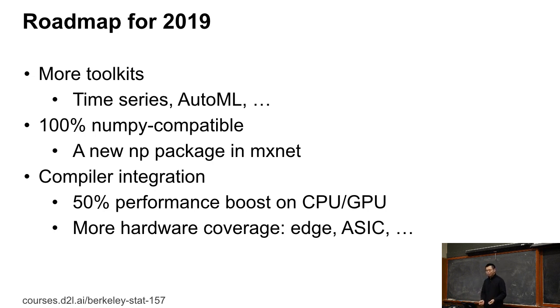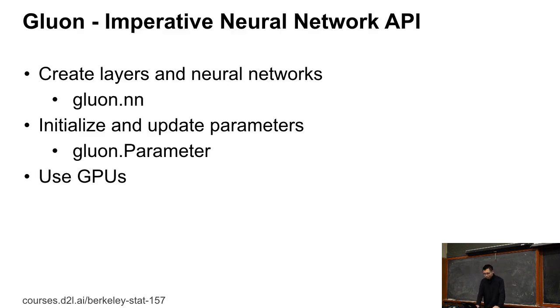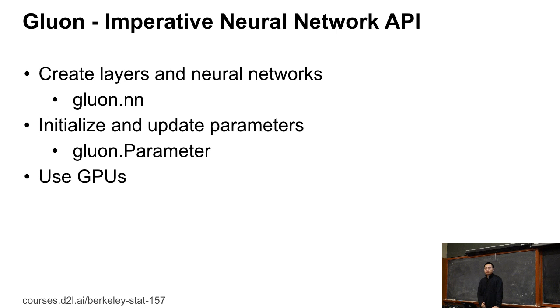For the rest of this session, let's go through a few tutorials about Gluon. We already talked about the NDArray interface; now we'll talk a little more about how to write neural networks. There are three things to cover: how to create and define neural networks and layers, how to initialize and manipulate parameters, and — because we're going to start teaching convolutional neural networks next week — how to use GPUs. For multi-layer perceptions a laptop CPU is good enough, but for convolutional neural networks, CPU is too slow.